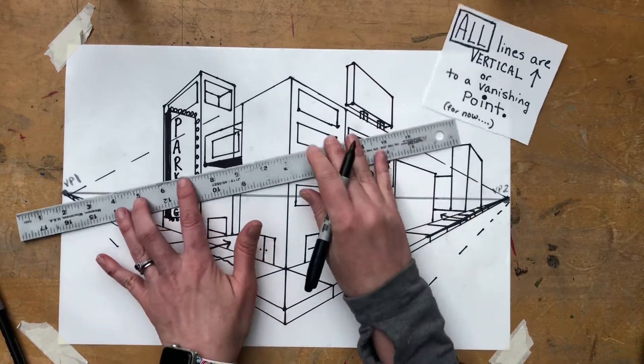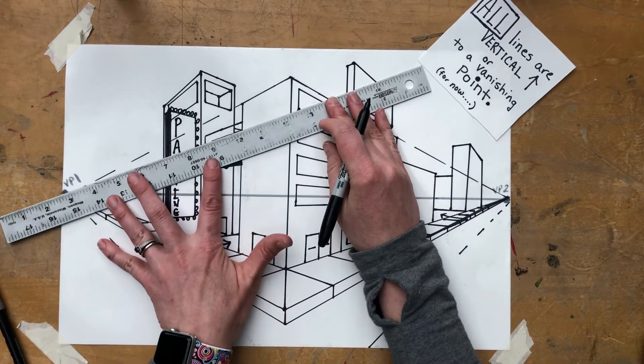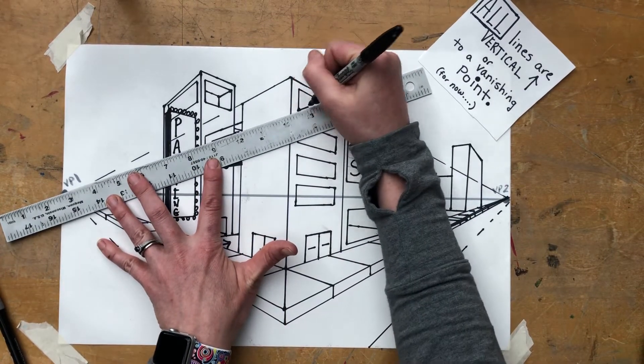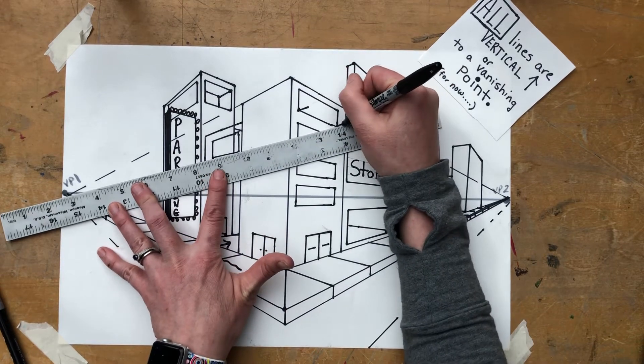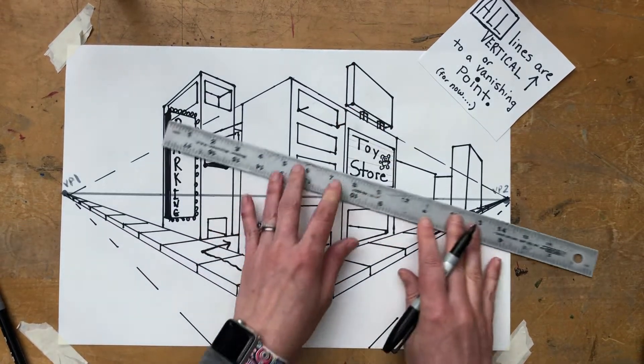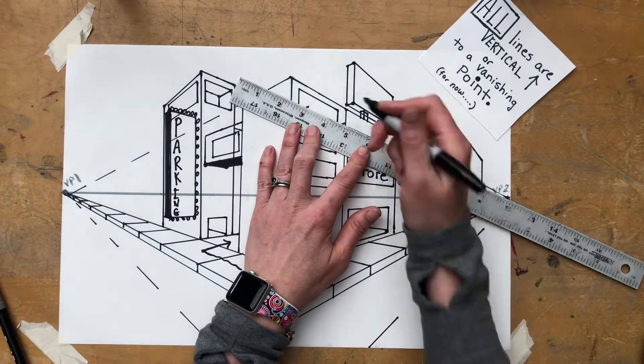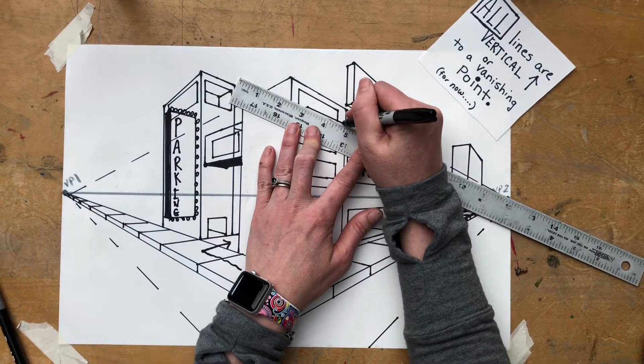So if I would want some sort of balcony sticking off of this window, you see those two dots there? If I go to the opposite vanishing point, instead of VP2, like the top and bottom of that window, I go to VP1. Now I have little arms sticking off and that's the bottom of a balcony. And because it's above the horizon line, I can see the bottom of it.